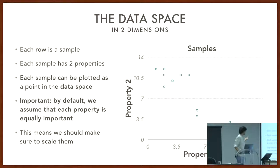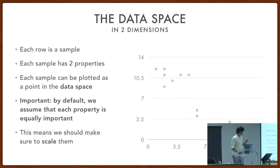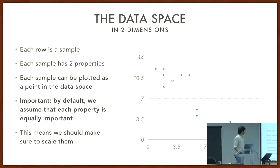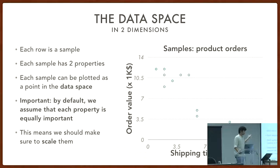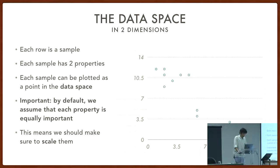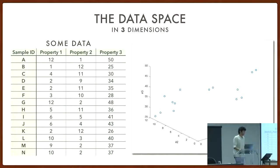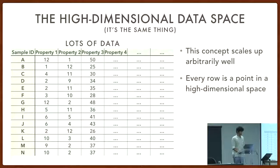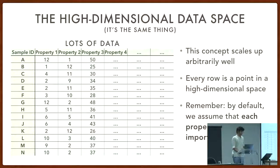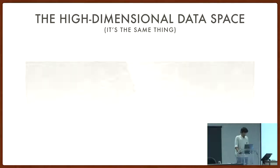Each property is equally important, and we should make sure they're scaled approximately similarly, so you don't have ten thousand dollars of income and a two-inch toenail creating confusion. Real-life examples: birds with weight and height, bank account holders with assets and debt, people ordering products where you want the highest-value orders to ship fastest. Moving to three dimensions gets a little murky — you can't really see the depth. In high dimensions you can't plot it at all, but you can scale up the concept of the data space, where every row is a point and each property is equally important.